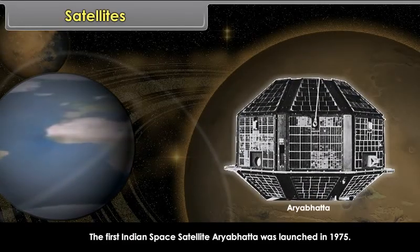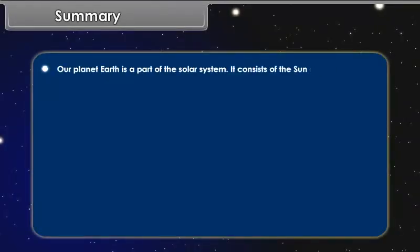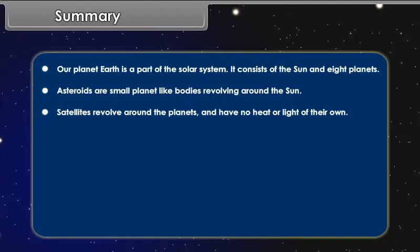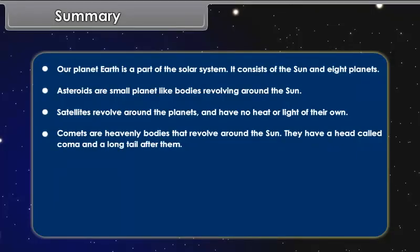Summary. Our planet Earth is a part of the solar system. It consists of the Sun and eight planets. Asteroids are small planet-like bodies revolving around the Sun. Satellites revolve around the planets and have no heat or light of their own. Comets are heavenly bodies that revolve around the Sun. They have a head called Koma and a long tail after them.